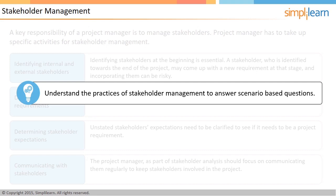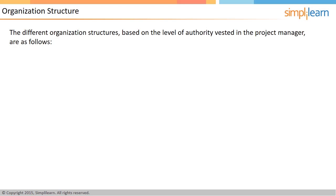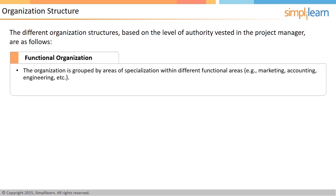Projects are performed in an organization and the functioning of the organization might affect the project. The different organization structure types are based on the level of authority that a project manager has. In a functional type of organization, the organization is grouped by area of specialization within different functional areas — for instance, marketing, accounting, engineering, etc. Each employee typically reports to a functional manager, and projects are normally undertaken within the department itself. If a project requires assistance from another department, the request moves from the head of the requesting department to the head of the concerned department.